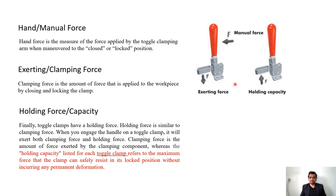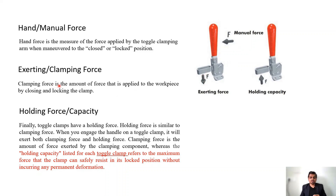The manual force or hand force is the force we apply with our hand while moving the handle of the clamp to clamp the job. Then we have the exerting or clamping force, which acts in the downward direction in this case. The clamping force is the amount of force applied to the workpiece by closing the locking mechanism.